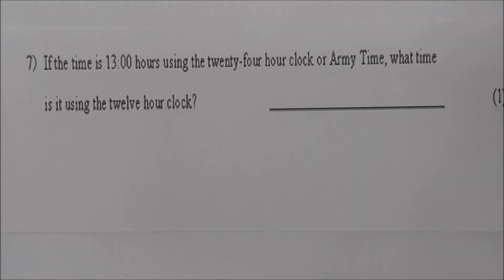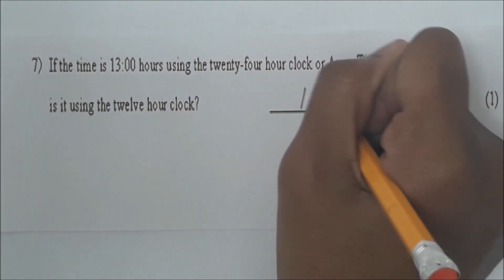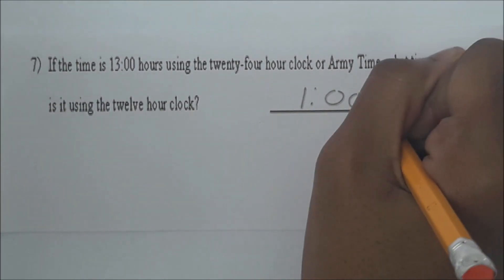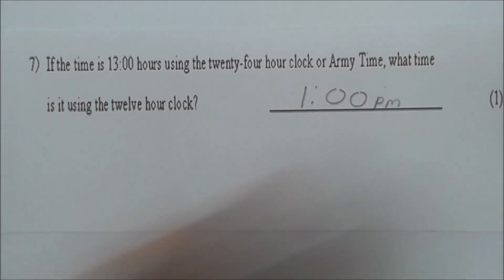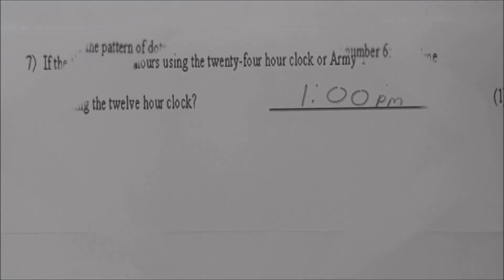Read number 7. If the time is 13 hours using the 24-hour clock or army time, what time is it using the 12-hour clock? 1 o'clock. Write 1 p.m. We know that after 12 noon it goes 13 up to 2400 hours, which would be 12 midnight.